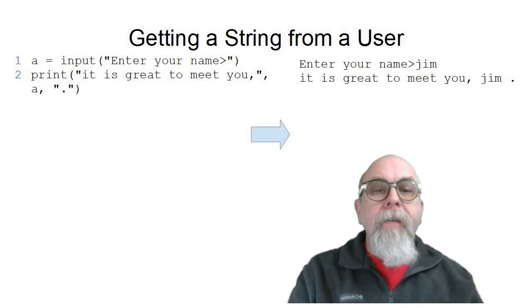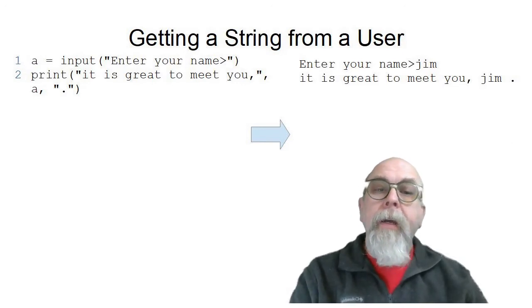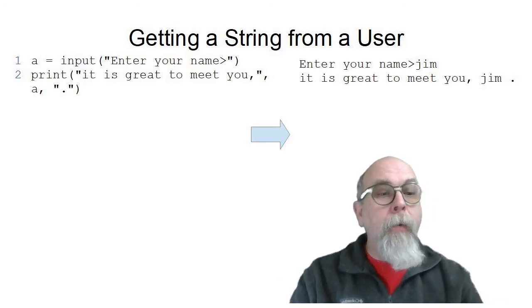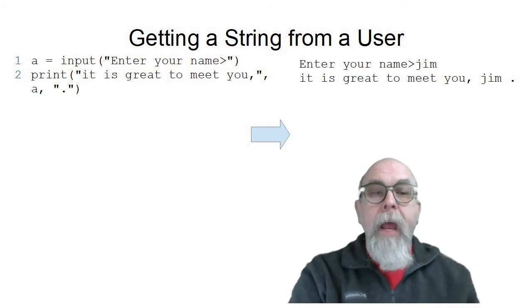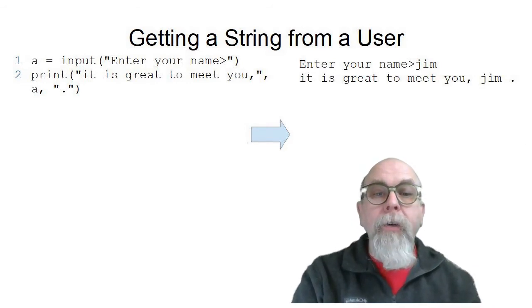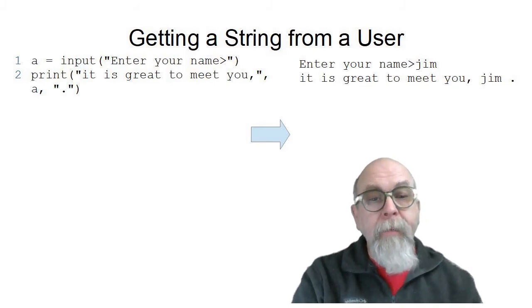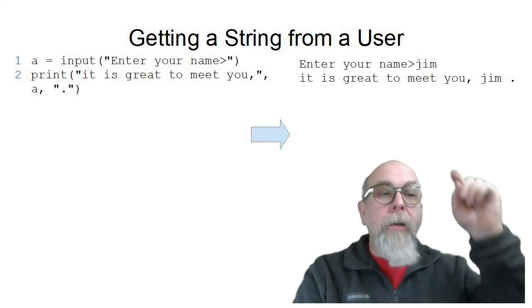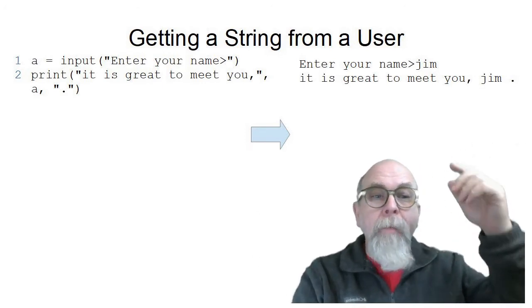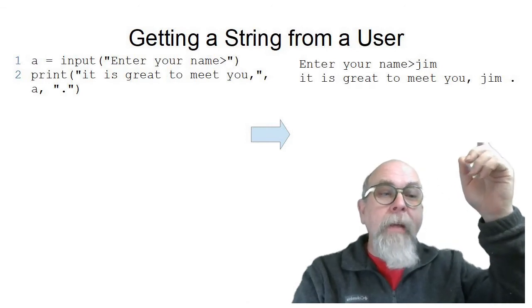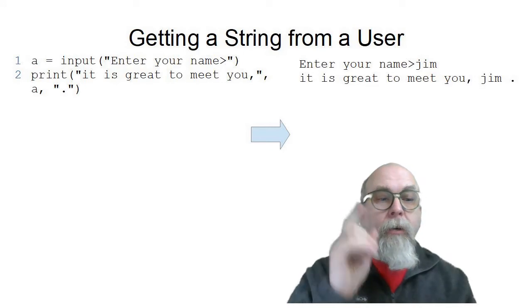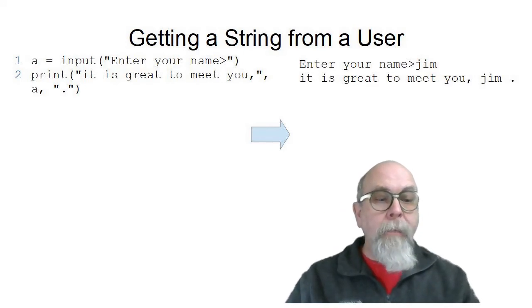Here we see a very simple sample program in Python. It's two lines long. Line one: A equals input with the prompt 'enter your name >'. On line two, we say 'it's great to meet you' and the name that they entered. You can see the output above — 'enter your name' — and I typed in Jim, because that's my name, and it says 'it's great to meet you, Jim.' A very simple little Python program, but here you can see the use of the input statement and the string the user typed in.